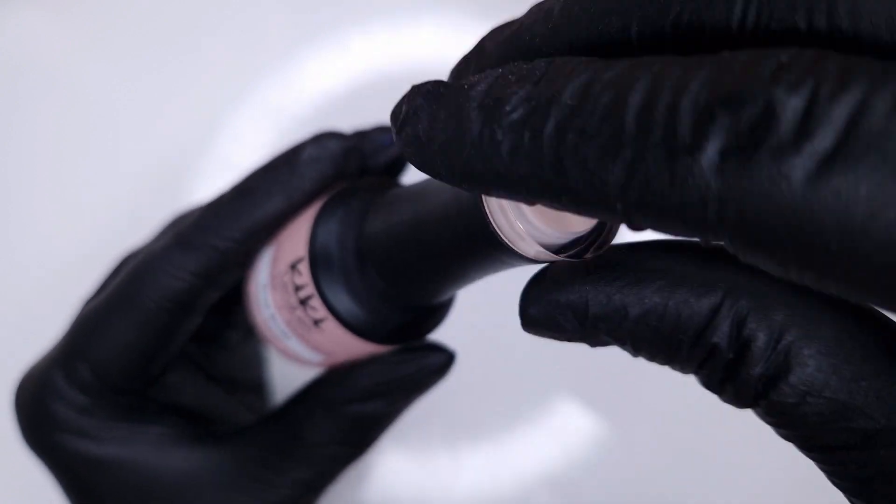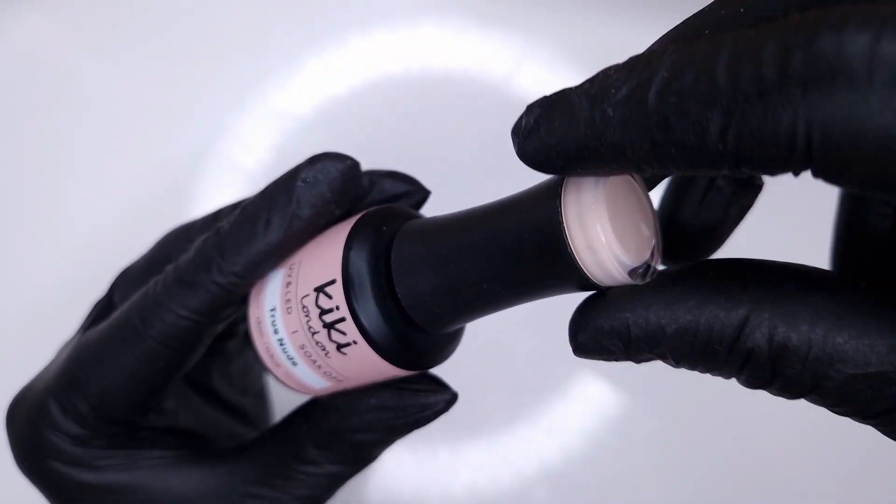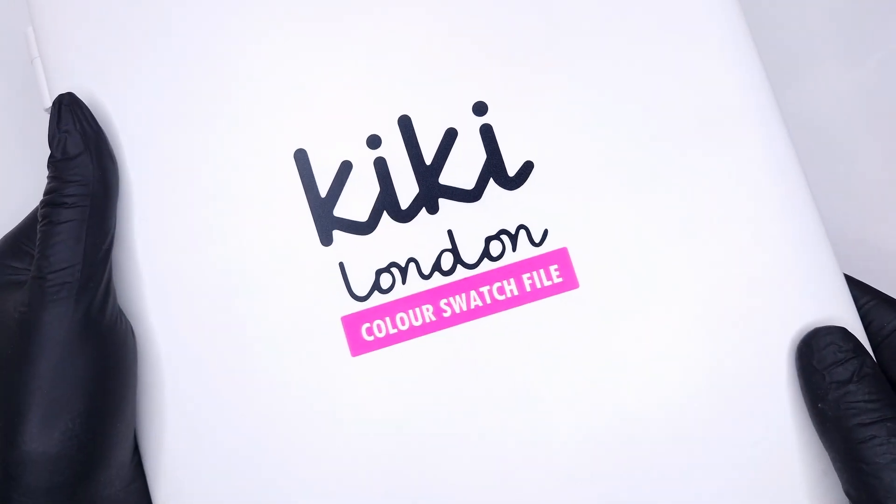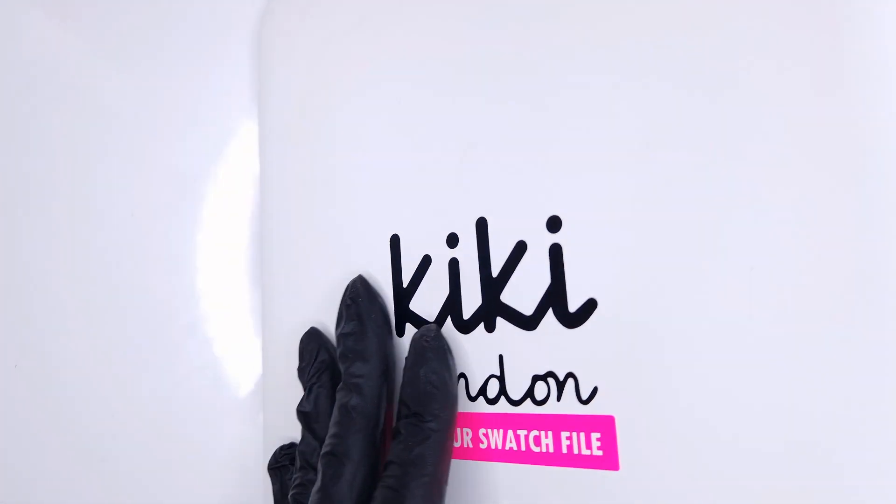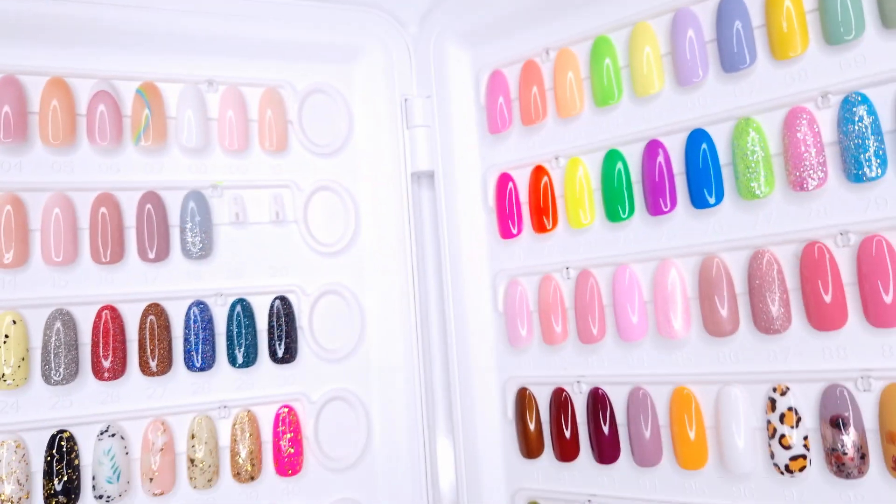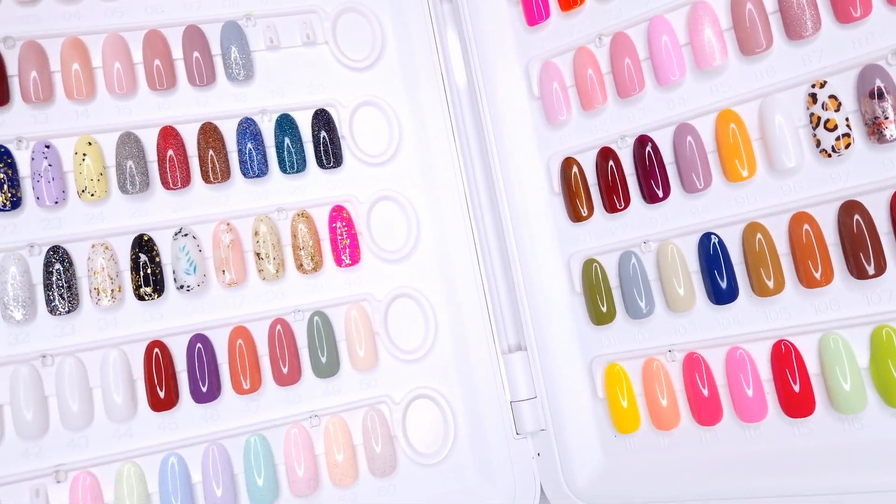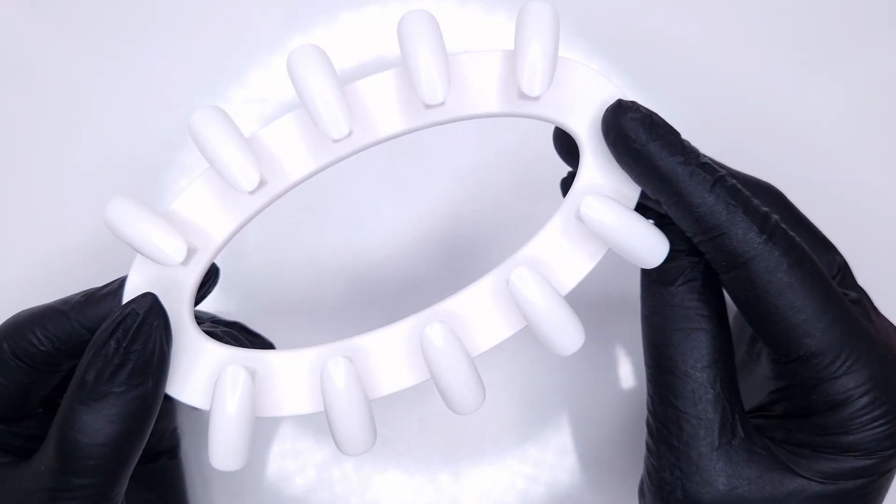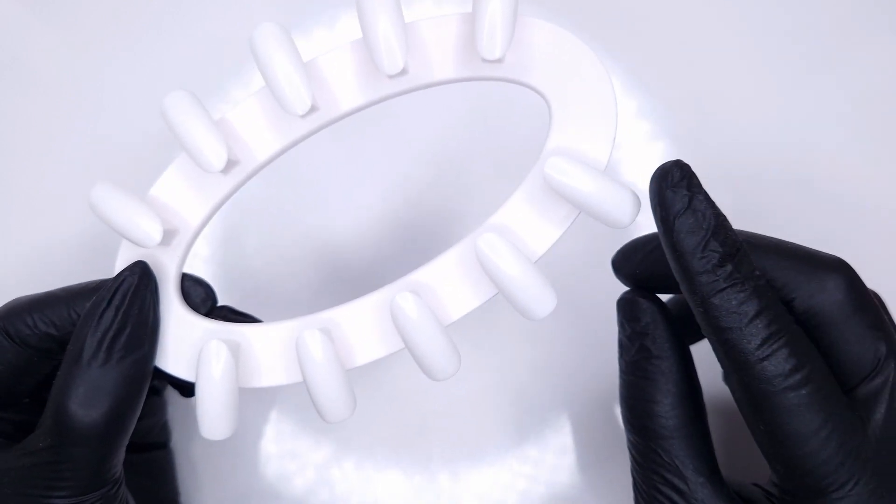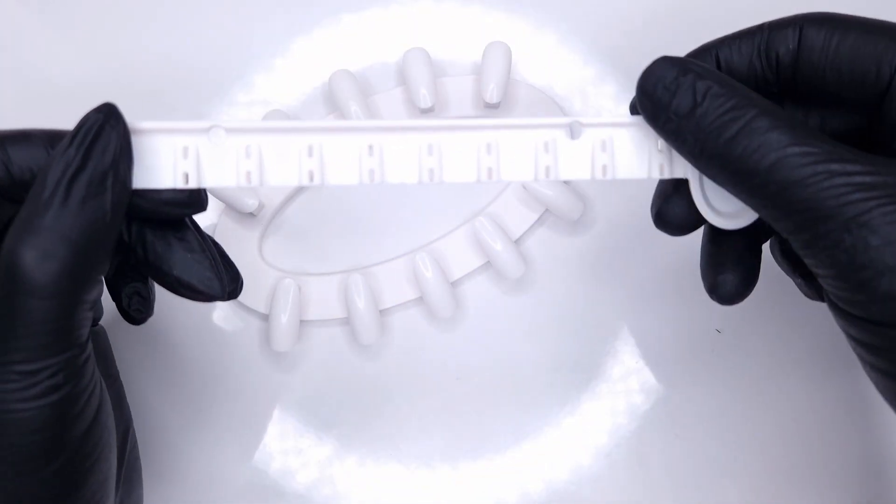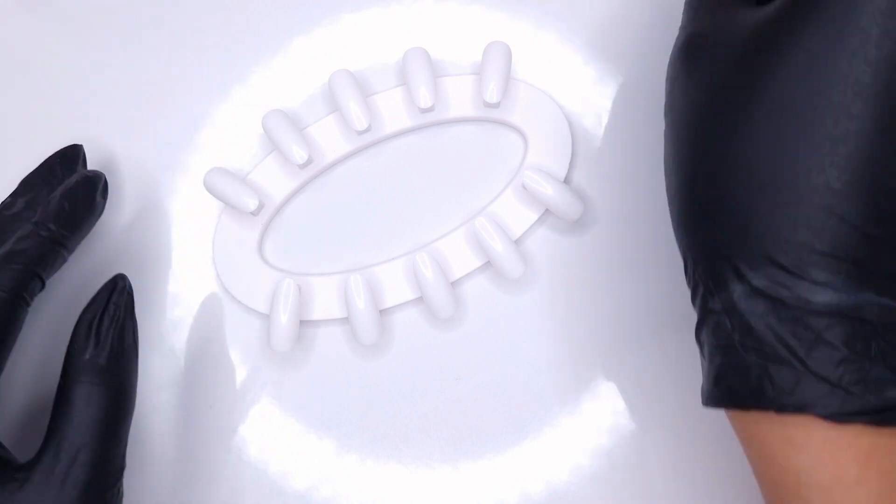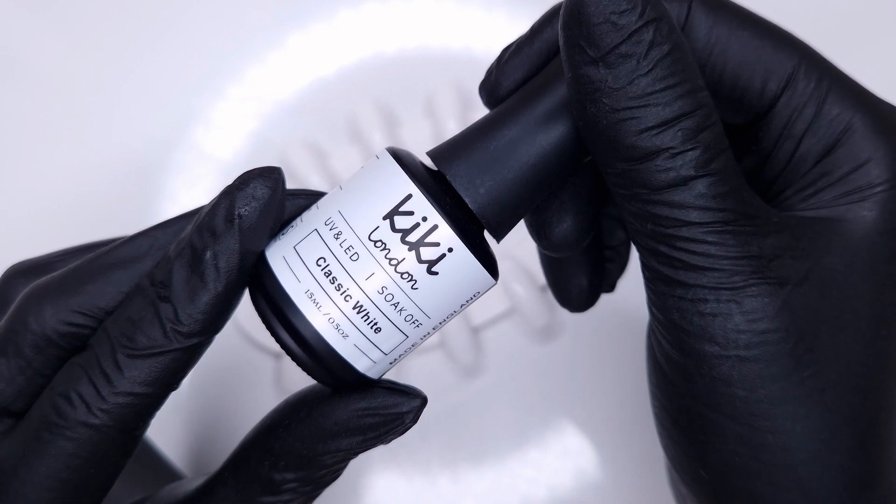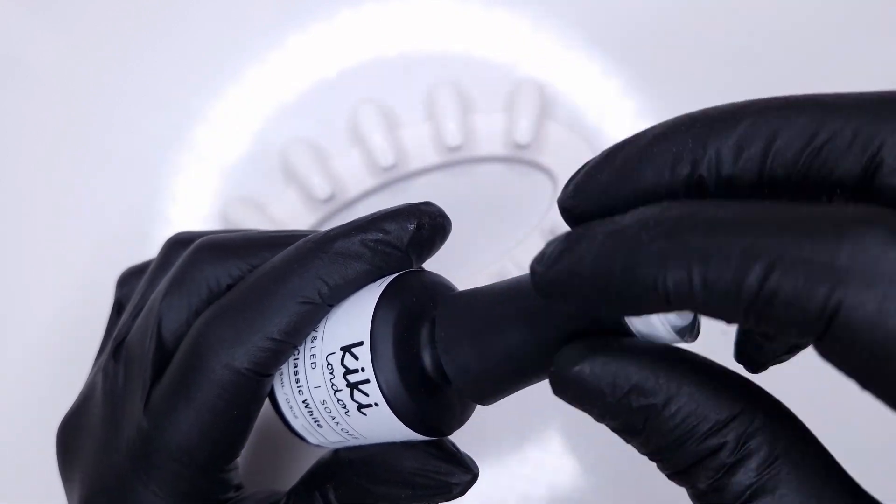Now I did mention that I found the consistency of these the same or very similar to the Kiki London line. So you're not going to have a new system to learn. You're not going to notice a transition if you are adding these colors into your line. Here I was just quickly showing you that we're going to be swatching these on the Kiki London color swatch file which comes with this handy tip stand. So let's start swatching.